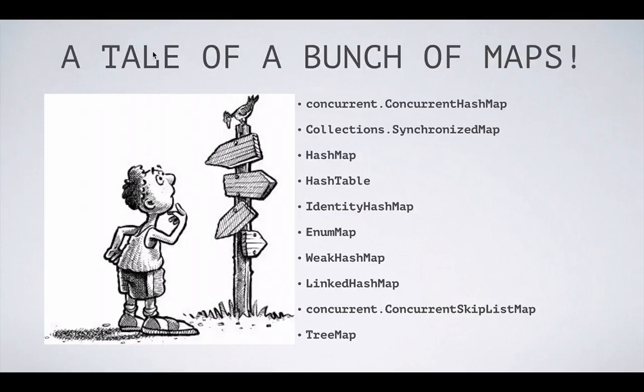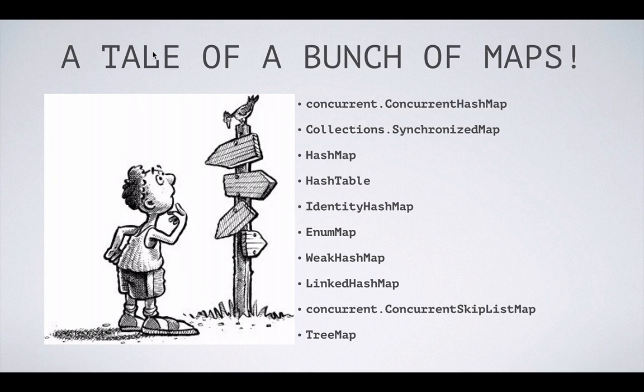In this video, we are going to explore the various map implementations available in the java.util package. This is a continuation from my previous video regarding HashMap internals. I will also try to show some examples where concurrency can cause troubles in HashMap, even when we use ConcurrentHashMap, and what we can do to work around it. To start with, in java.util map implementations, you have so many map implementations as you can see.